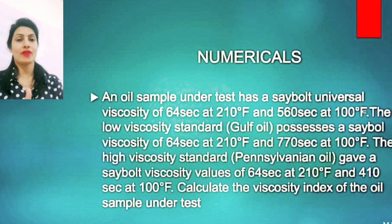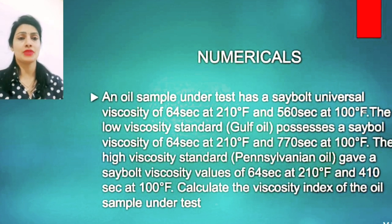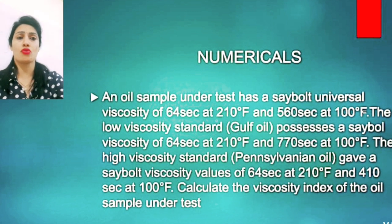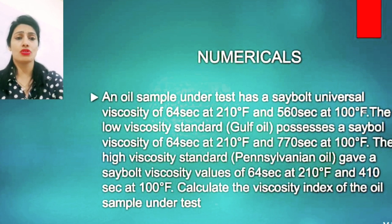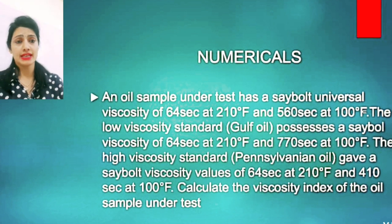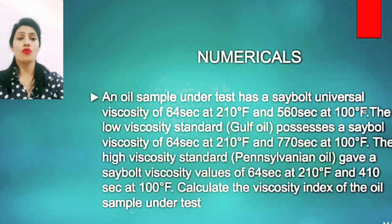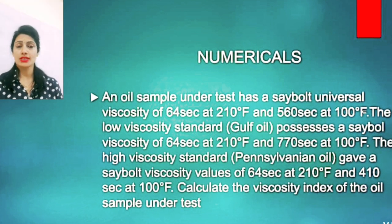Now let's read the question carefully. The oil sample under test has a Saybolt universal viscosity of 64 seconds at 210°F and 560 seconds at 100°F. Since 64 seconds at 210°F is common to all oils, we only use the values at 100°F. So, U = 560 seconds.